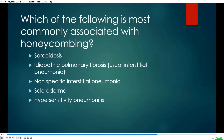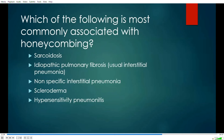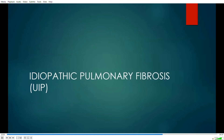Now a question: which of the following is most commonly associated with honeycombing? A) sarcoidosis, B) idiopathic pulmonary fibrosis (also known pathologically as usual interstitial pneumonia), C) nonspecific interstitial pneumonia, D) scleroderma, or E) hypersensitivity pneumonitis? The answer is idiopathic pulmonary fibrosis or UIP — by far the most common cause.